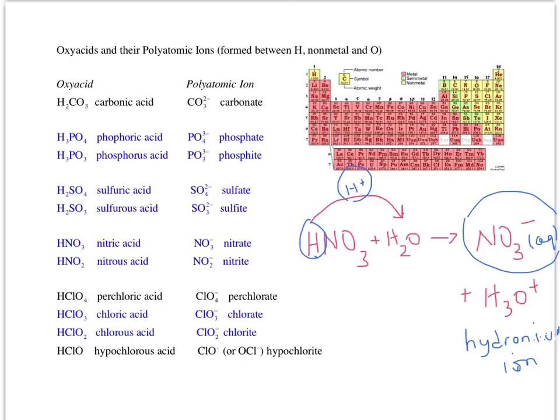For diprotic carbonic acid, losing both hydrogens gives the 2− ion. For phosphoric and phosphorous acids, losing all three hydrogens gives the polyatomic ion — phosphate, and so on. Do you need to know the names of everything on this page? Yes, absolutely, 100%.